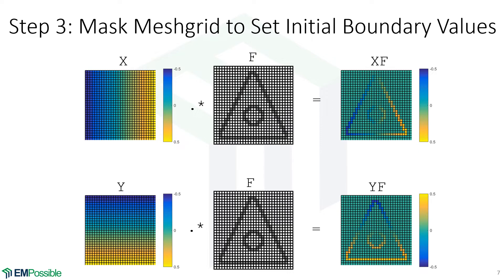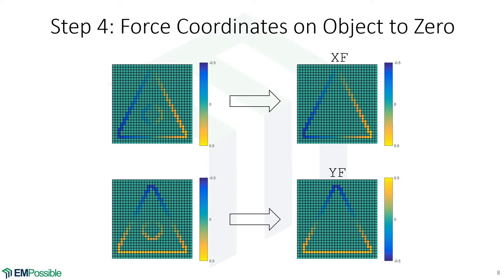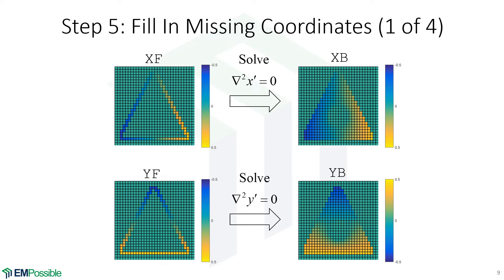These two arrays on the left show where we were on the previous slide — our X and Y coordinates isolated to where the boundaries are. At this point, we need to force the coordinates around our object to zero. That boundary is still there, but we set all coordinates to zeros. We do that for both X and Y. The coordinates out at the cloak boundary remain set to whatever they originally were.